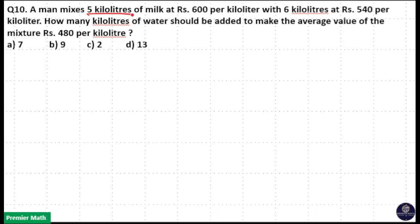A man mixes 5 kilolitres of milk at Rs. 100 per kilolitre with 6 kilolitres of milk at Rs. 540 per kilolitre. How many kilolitres of water should be added to make the average value of the mixture at Rs. 480 per kilolitre?